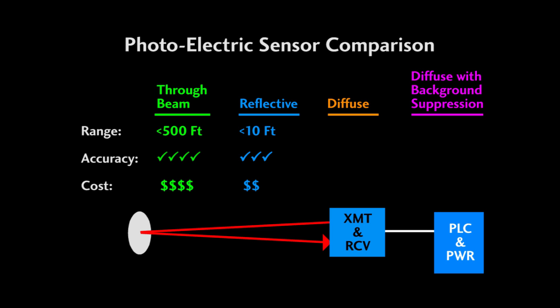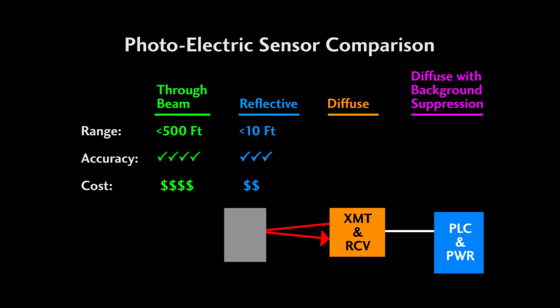While the through beam and reflective sensors are looking for an interruption of the beam, diffuse photoelectric sensors actually look for the object to reflect the beam. This is great for those situations where you don't have access to the far side of the object. The downside of this is it is heavily dependent on the reflectivity of the object passing by, has a shorter detection distance, and is less reliable.